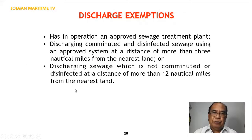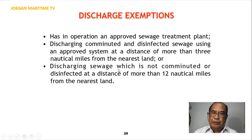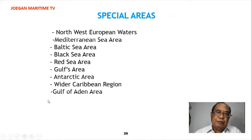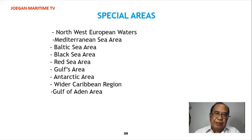Number six — discharge exceptions: a ship has in operation an approved sewage treatment plant; or number two, discharging comminuted sewage using an approved system at a distance of more than 3 nautical miles from the nearest land. Special areas include the Northwest European Waters, the Mediterranean Sea Area, the Baltic Sea Area, the Black Sea Area, the Red Sea Area, the Gulf Area, the Antarctic Area, the wider Caribbean Region, and the Gulf of Aden Area.